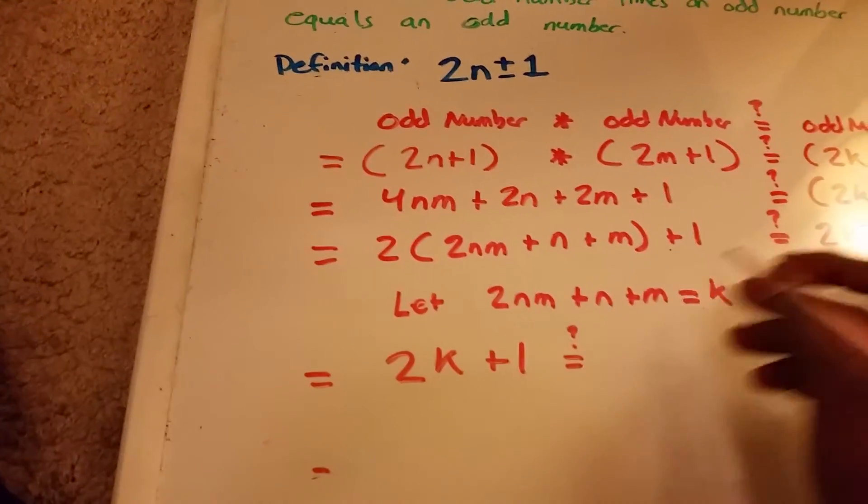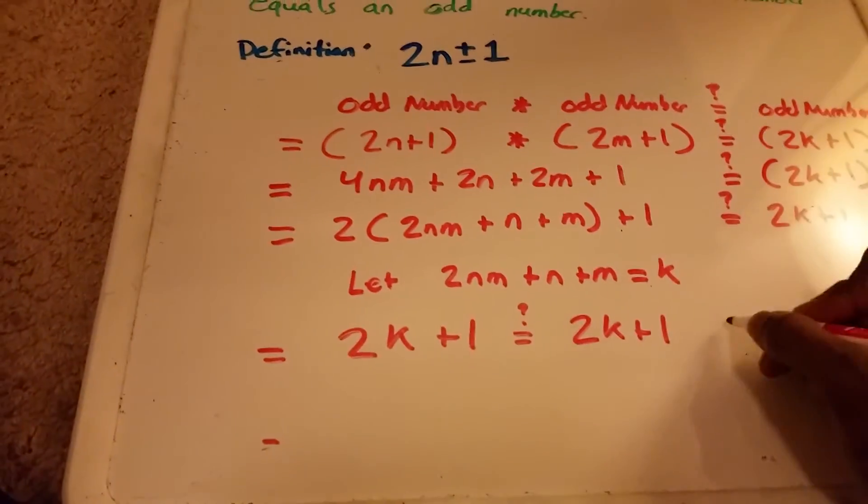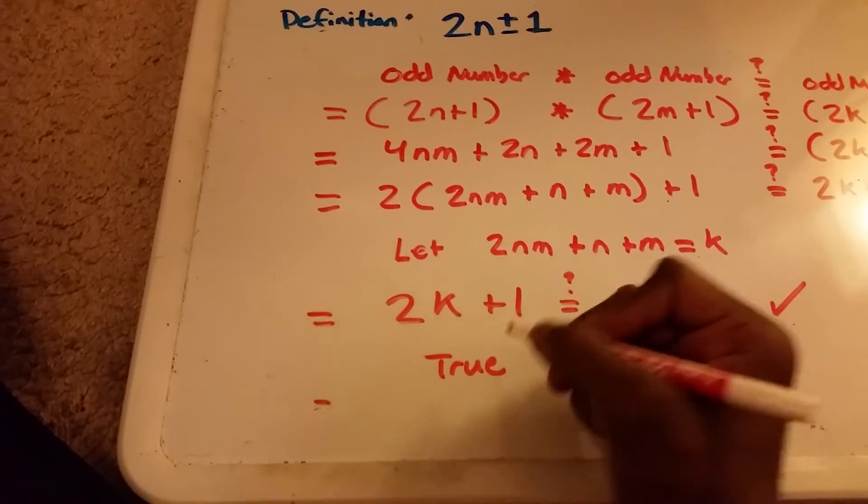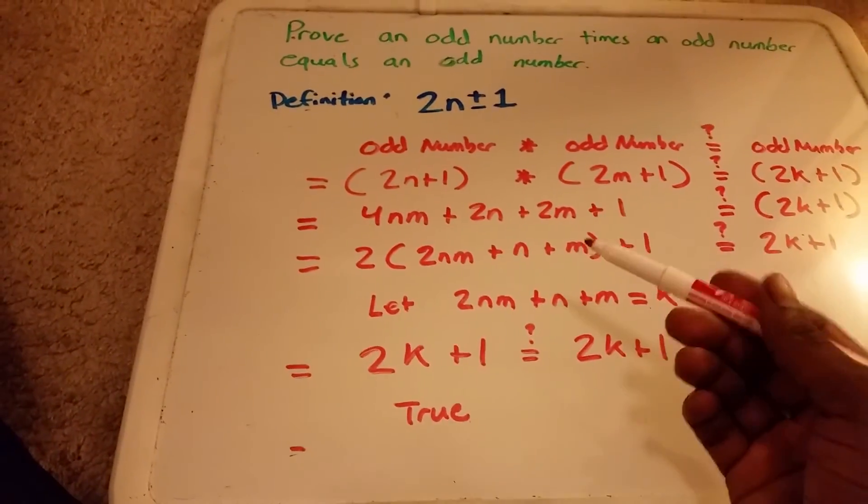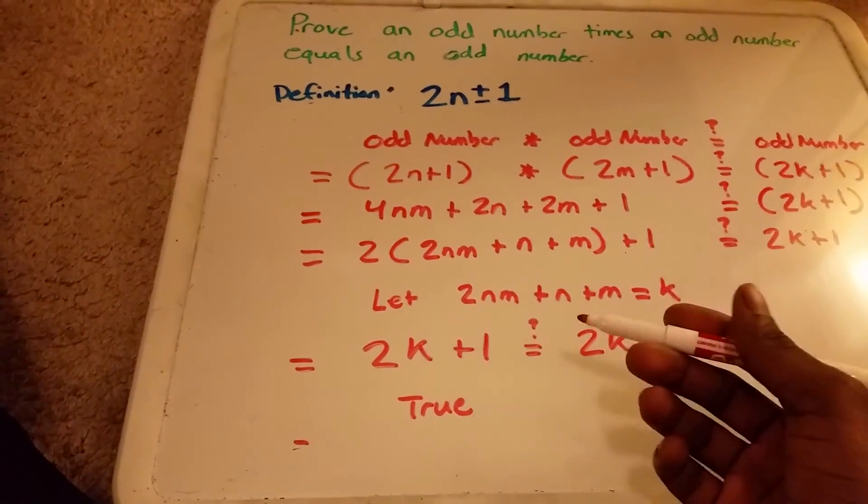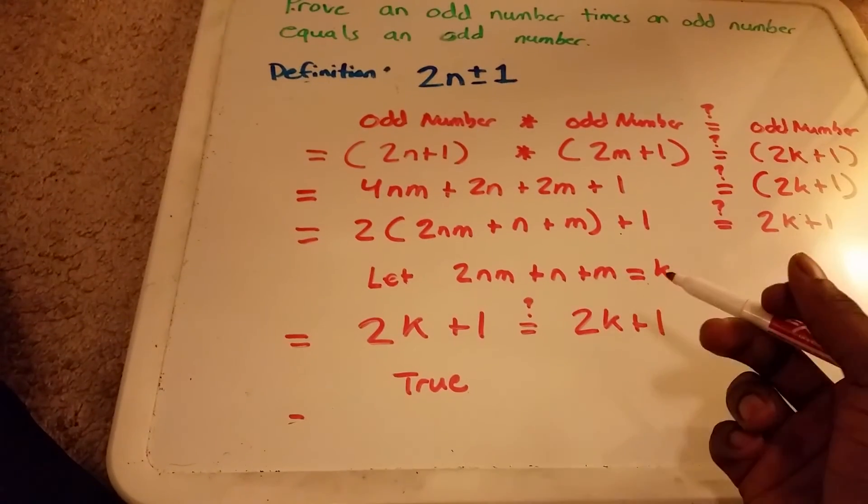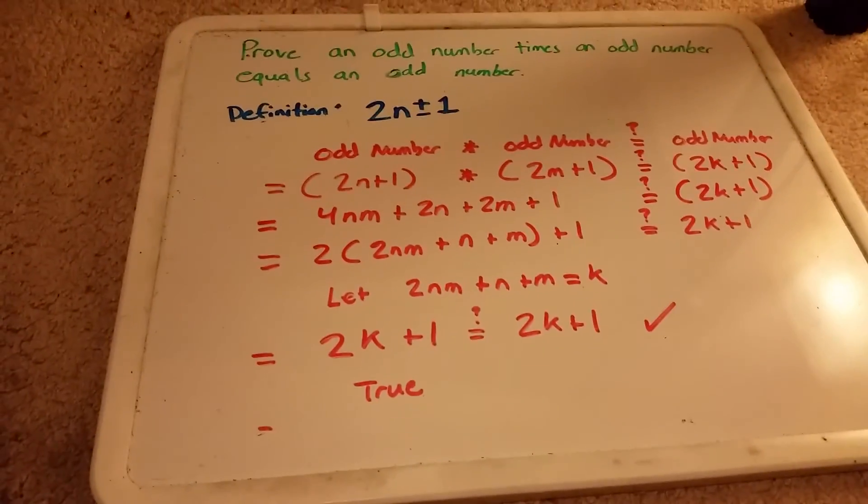Is that equal to 2k plus 1? Yes. So this is true. And this is a proof that any odd number times itself always equals an odd number. Alright, thank you guys and see you in the next video.